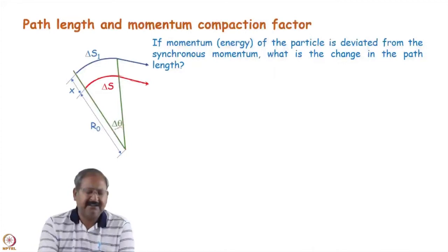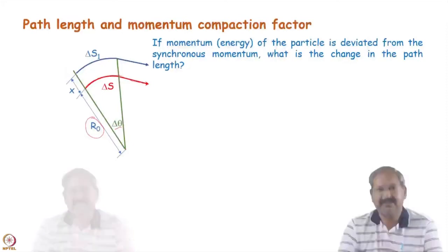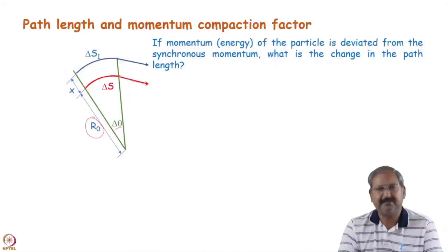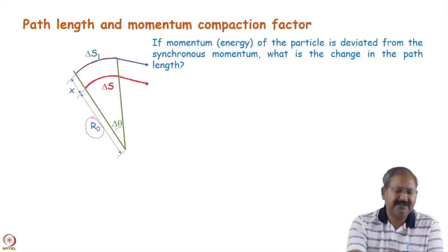This bending is delta theta and the radius of curvature for the design trajectory is r_0. Now suppose some other particle which has some momentum deviation from the design momentum will follow another trajectory due to dispersion. We already know that if a particle is deviated in momentum, the dipole magnet will send it to another trajectory decided by the dispersion. The length of the design trajectory inside the magnet is delta s, and the length of the trajectory of the particle with some momentum deviation is delta s_1.